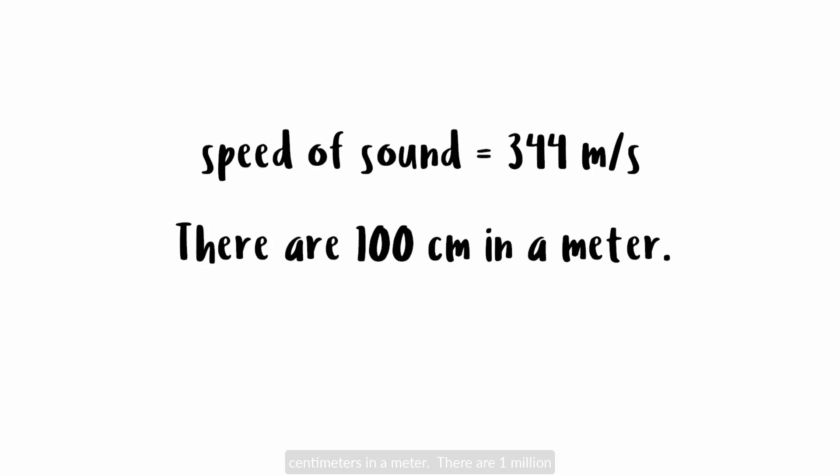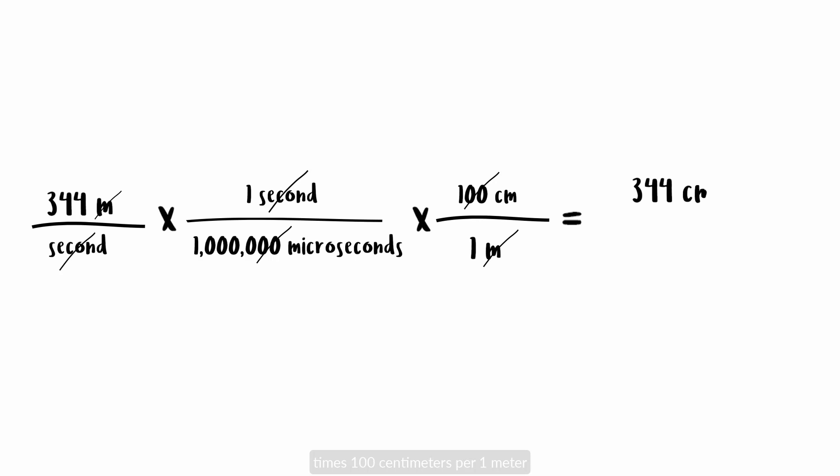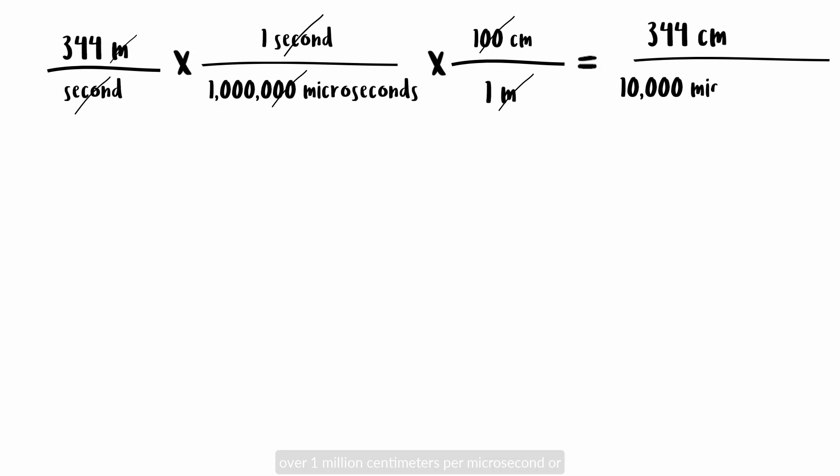Sound travels at about 344 meters per second. There are 100 centimeters in a meter. There are 1 million microseconds in a second. So, 344 meters per second times 1 second per 1 million microseconds times 100 centimeters per 1 meter equals 34,400 over 1 million centimeters per microsecond, or 344 centimeters per 10,000 microseconds.